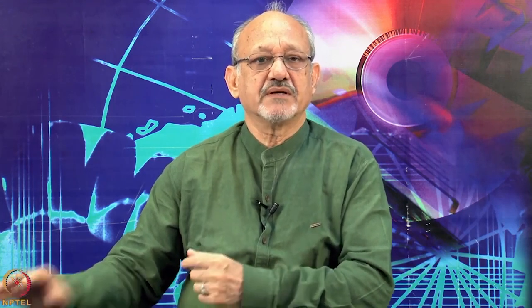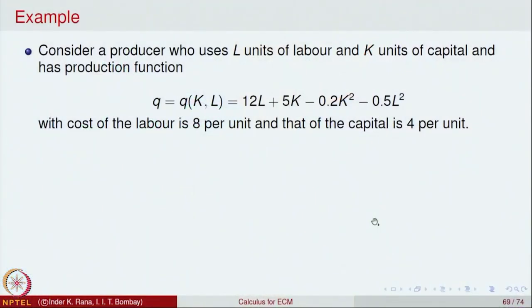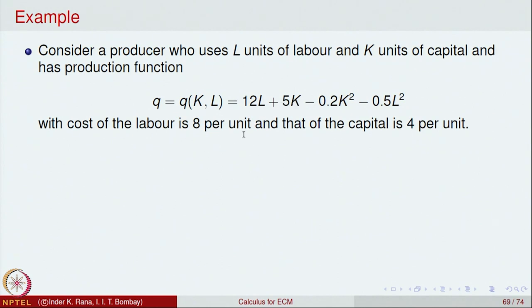Let us apply these criteria to an example in economics. Consider a producer which uses L units of labour and K units of capital to produce a product. The production function is given by Q(K, L) = 12L + 5K − 0.2K² − 0.5L². The cost of labour is 8 per unit and the cost of capital is 4 per unit.